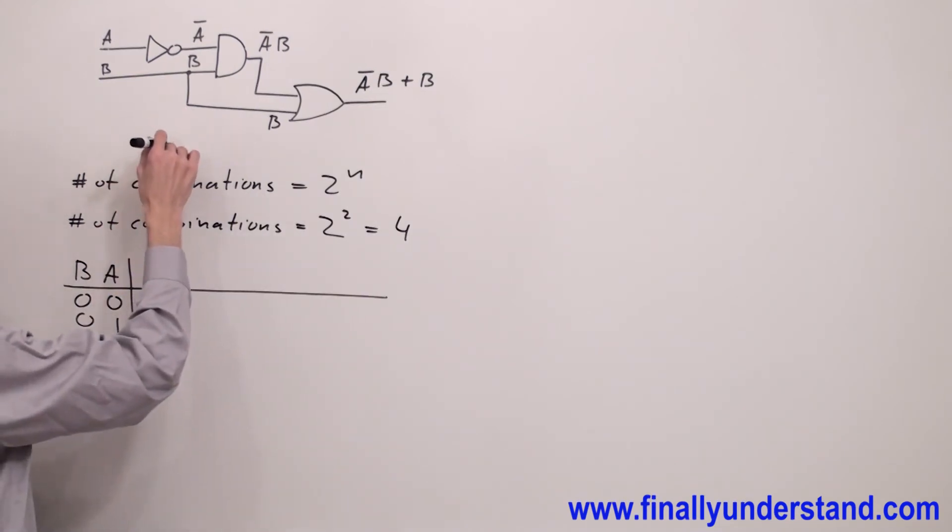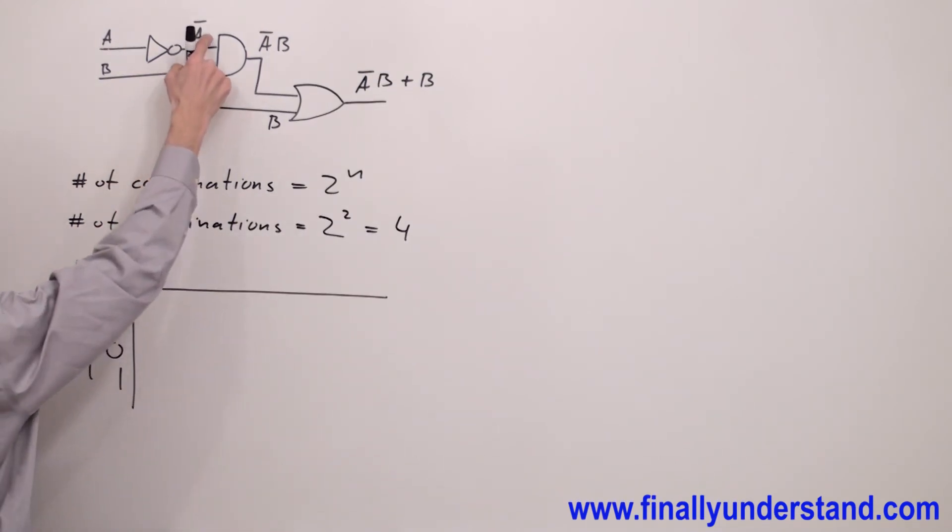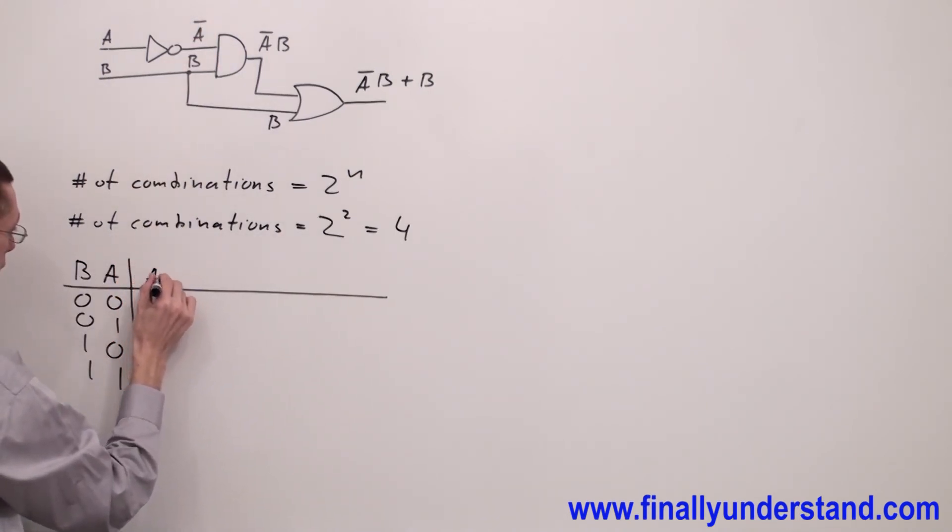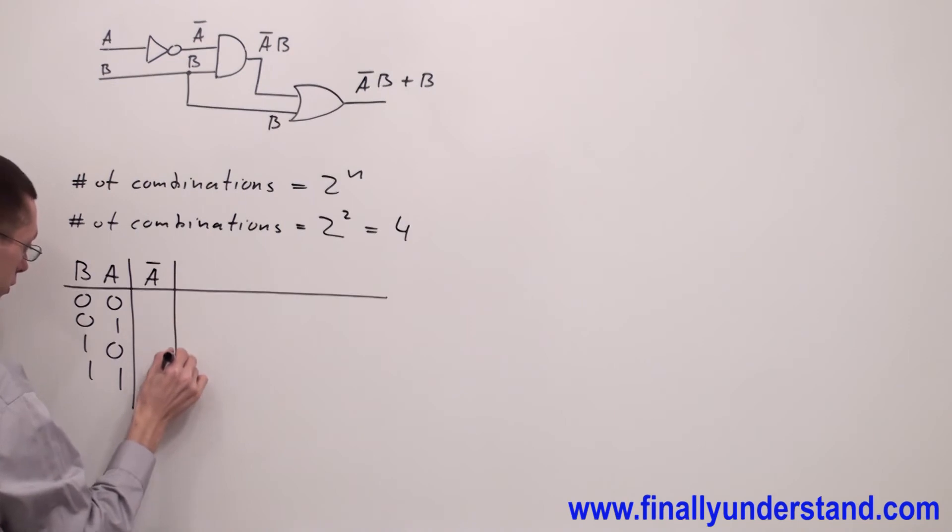You have to look at your diagram and notice that we have A'. That's why I have to make the column A' in my table. A' is opposite, is the complement of A. If A equals 0, A' equals 1. If A equals 1, A' is going to be 0. 0 is going to be 1. 1 is going to be 0. This is my column A'.